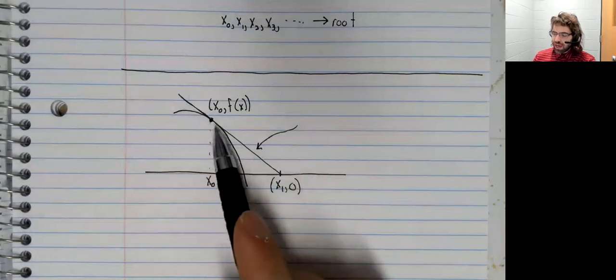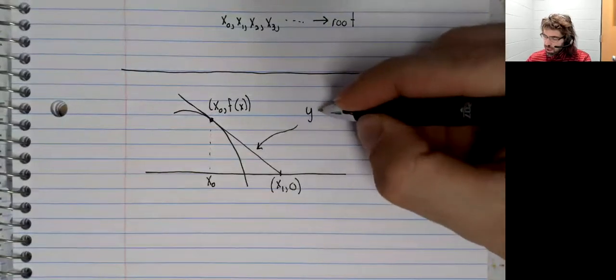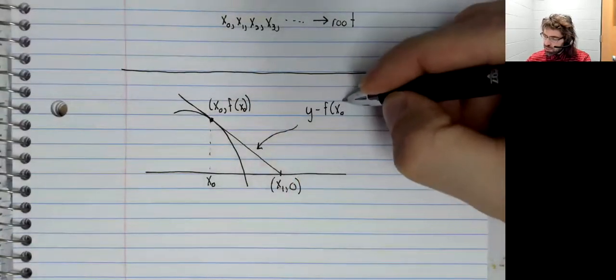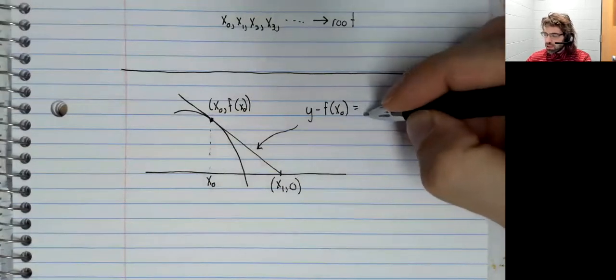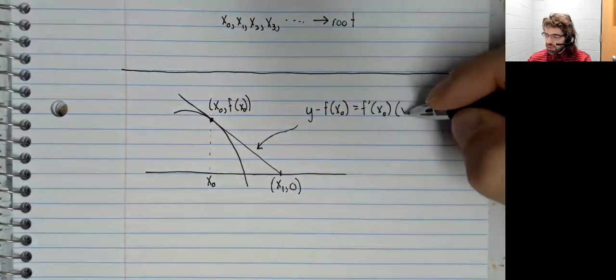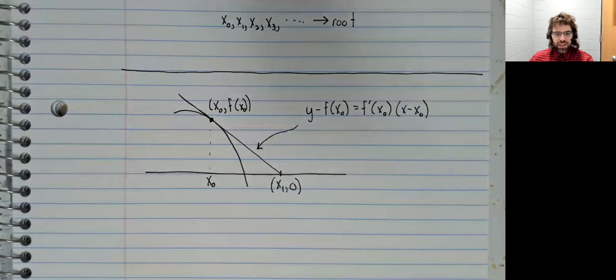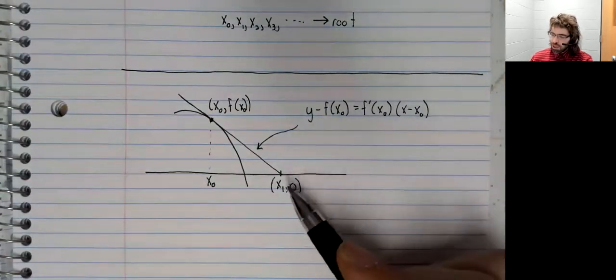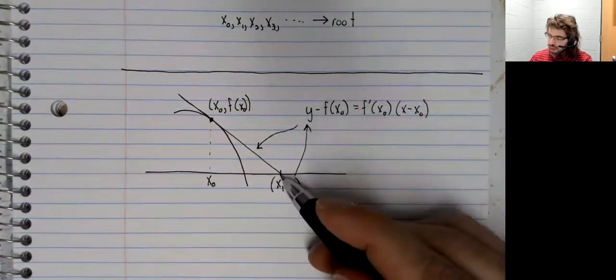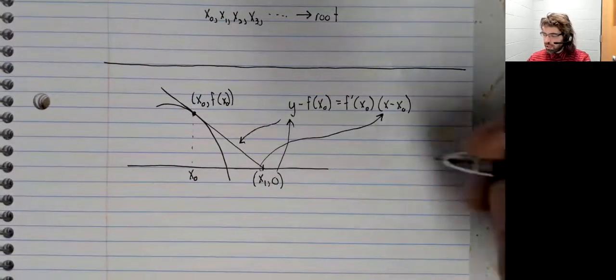This line is the linearization. So Y minus f of X sub 0 equals f prime of X sub 0 times X minus X sub 0. This point X sub 0 is a point on the line. So we'll let X be X sub 1 and Y be 0.